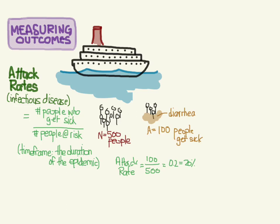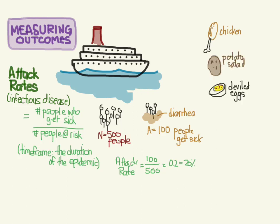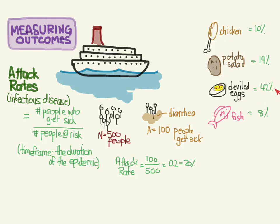You can use this to figure out what got these people sick. Maybe it was the food — was it the chicken, the potato salad, the deviled eggs, or the fish? You can calculate attack rates for each one. The numerator is the number of people who got sick that ate that food, and the denominator is all the people who ate it. Making up some numbers, clearly the deviled eggs has the highest attack rate, so it's probably the deviled eggs that were spoiled.